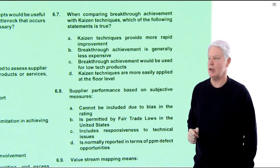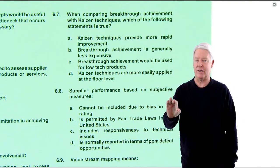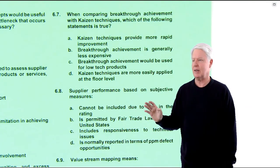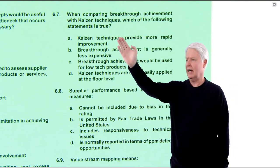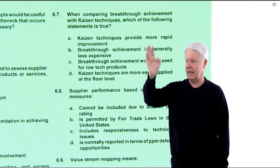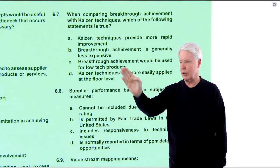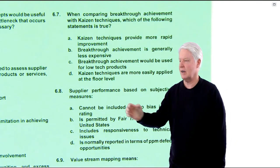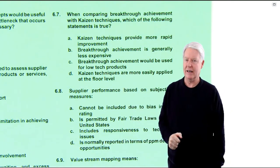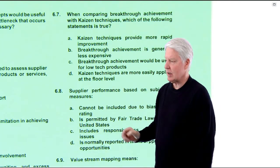Question 6.7: When comparing breakthrough achievement with Kaizen techniques, which of the following statements is true? Breakthrough is very aggressive — rip everything out, start from scratch, new technology, very expensive, very time consuming, and somewhat risky. Kaizen techniques are slow, incremental improvement over time. Kaizen techniques provide more rapid improvement? No. Breakthrough achievement is generally less expensive? No, it's more. Kaizen techniques are more easily applied at the floor level — yes, Kaizen was designed for the floor level. 6.7 has to be D, and it is.